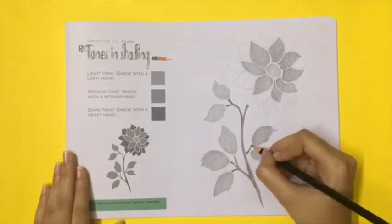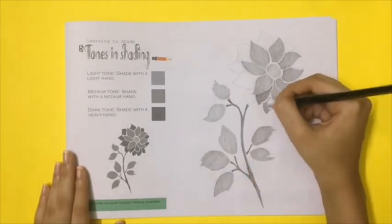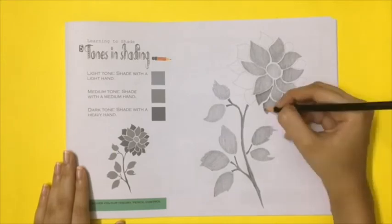Shade the stem a dark tone. Use a heavy hand. Repeat on the outermost petals of the flower.